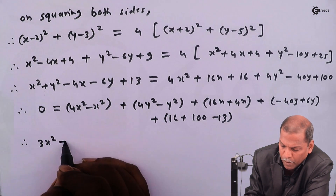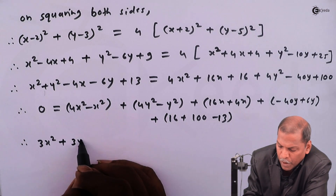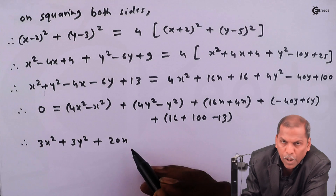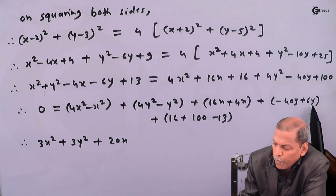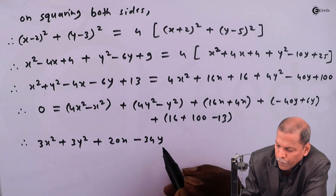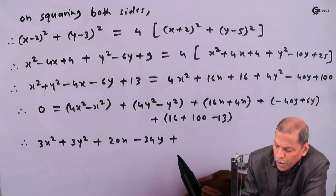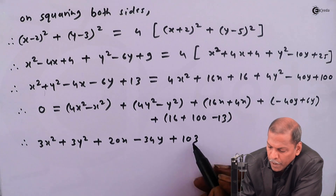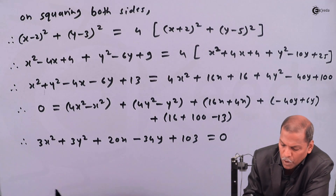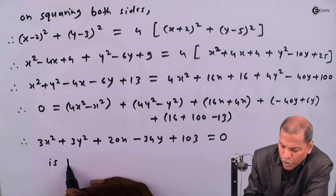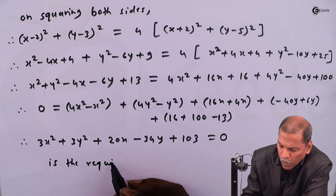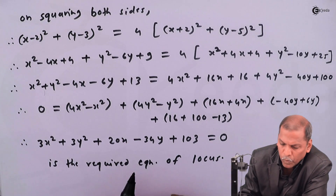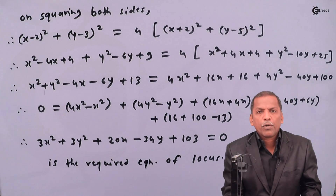Simplifying: 3x squared plus 3y squared plus 20x minus 34y plus 103 equals 0. So this is the required equation of locus. This is the required solution for the given problem.